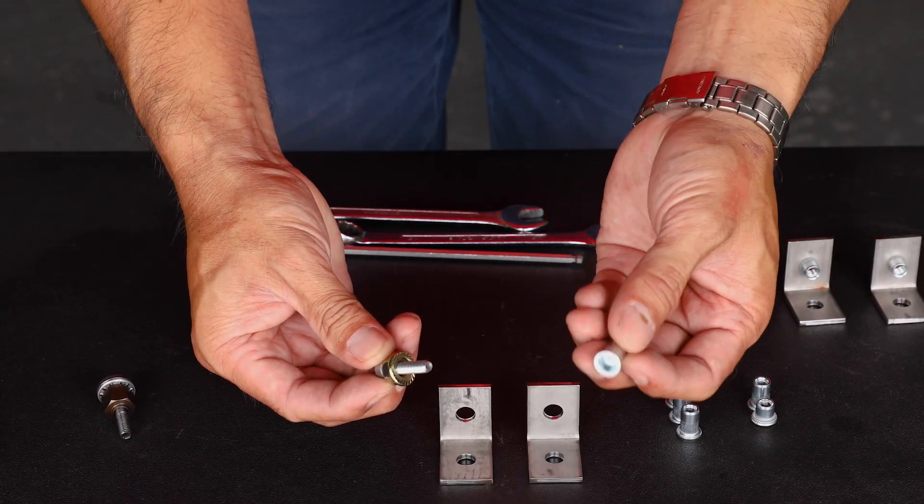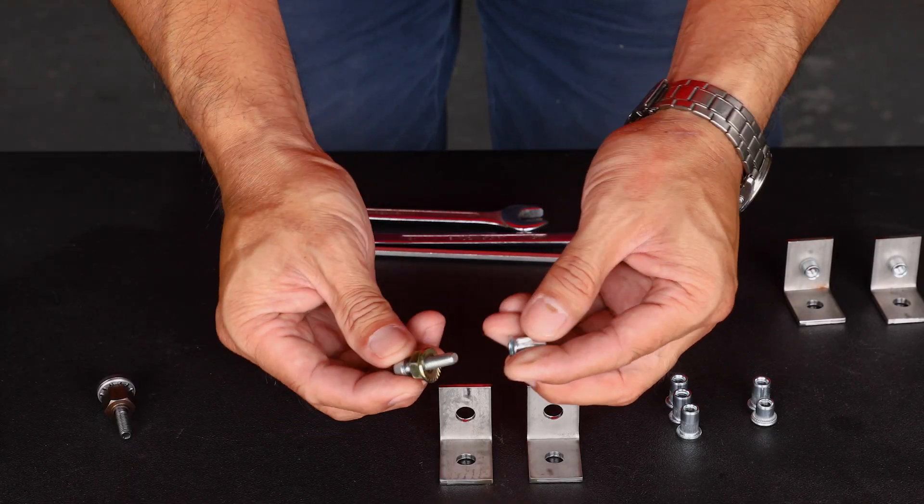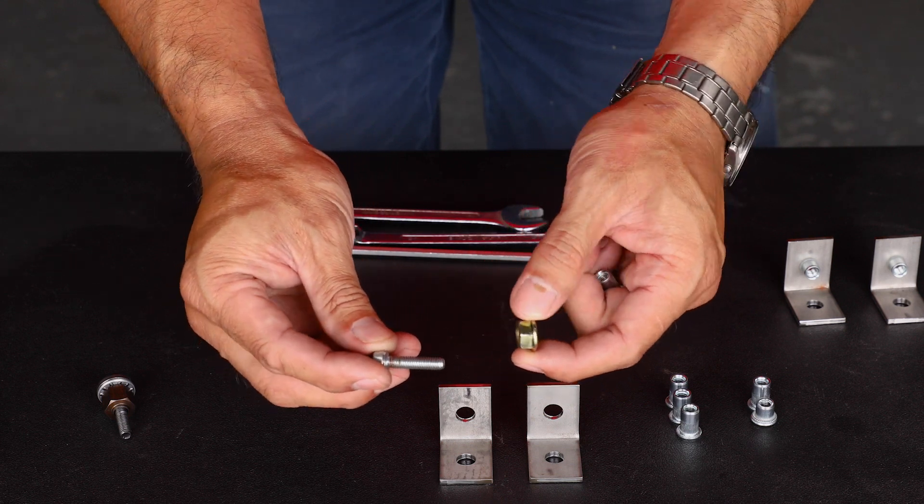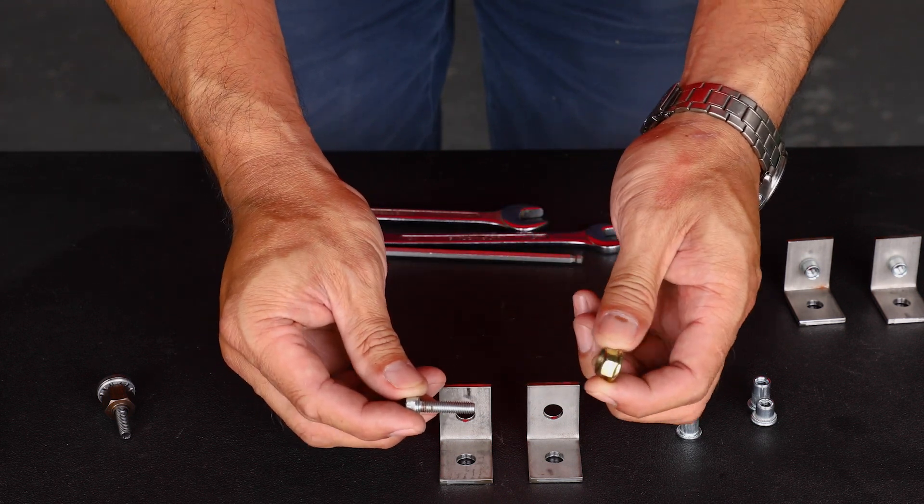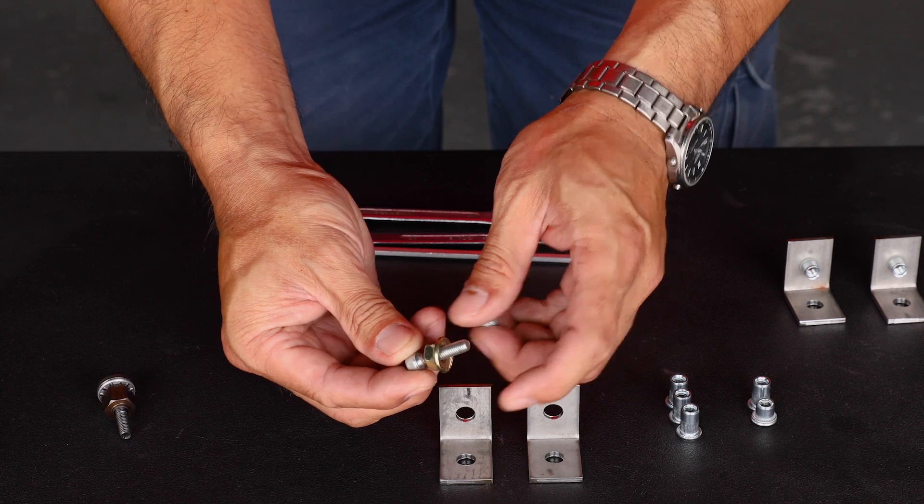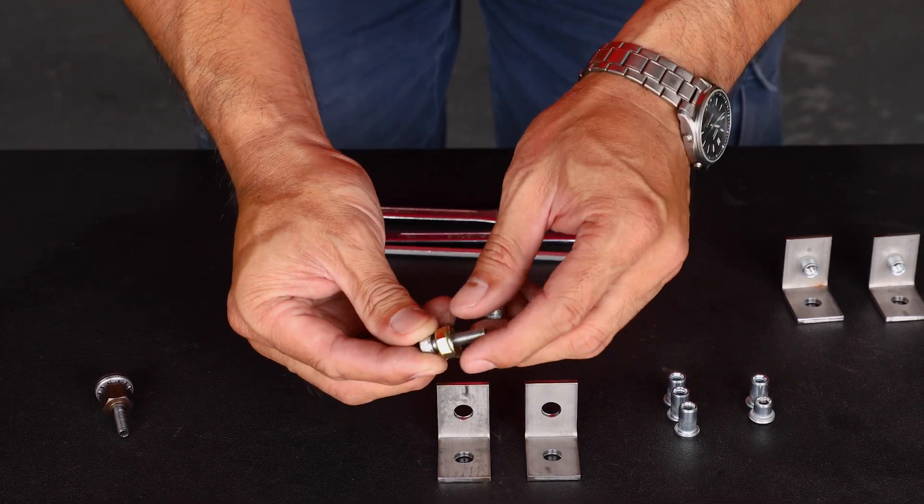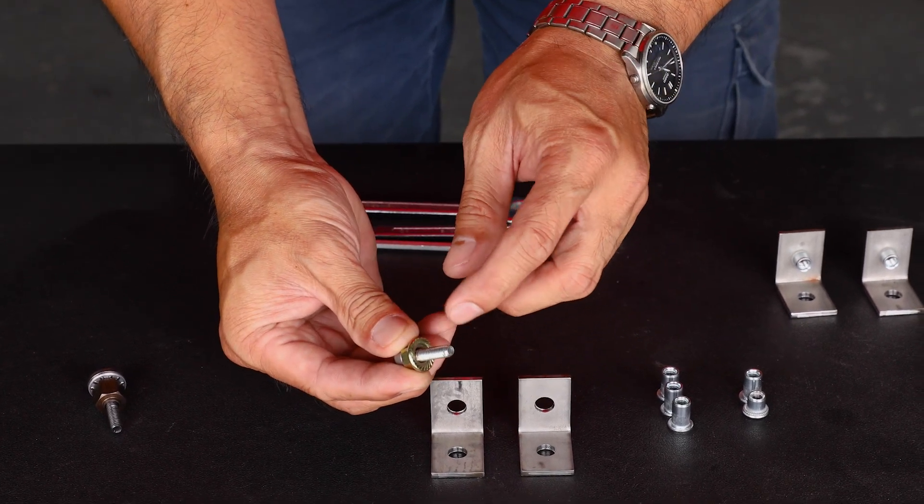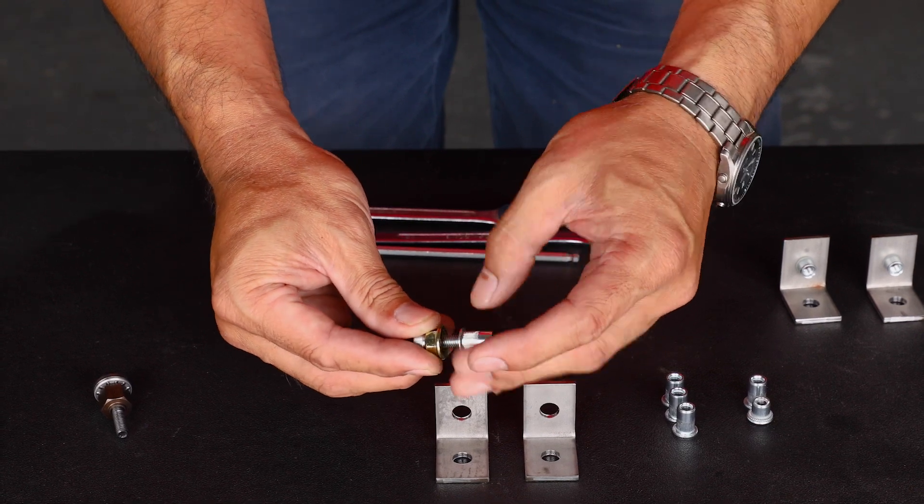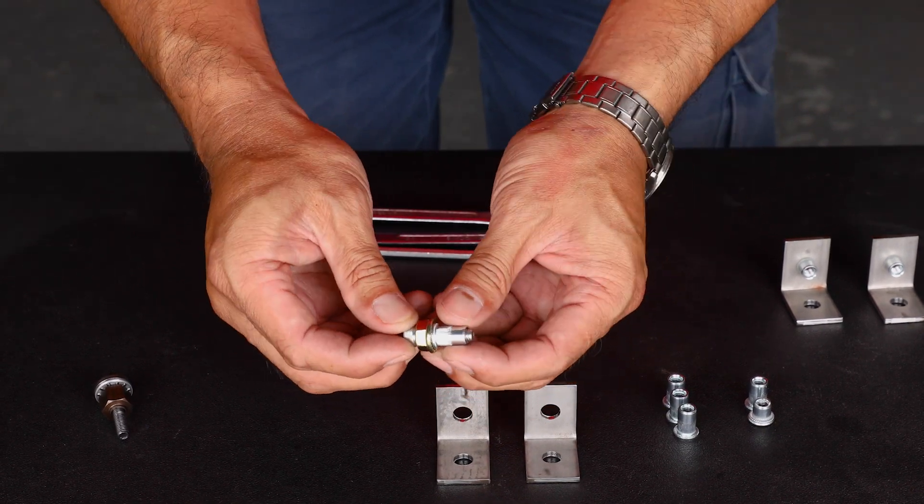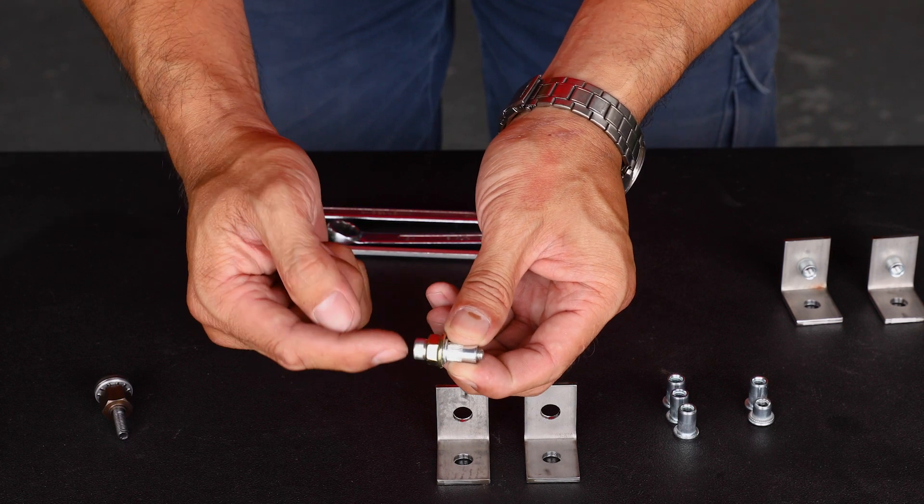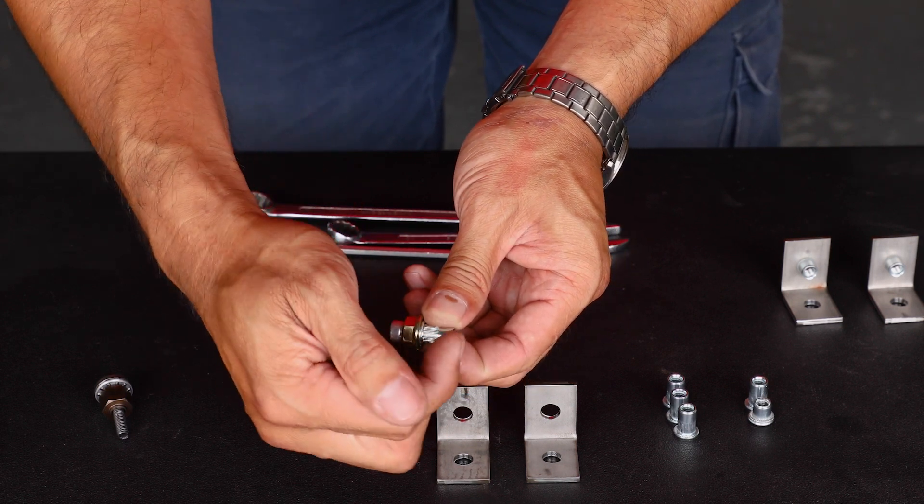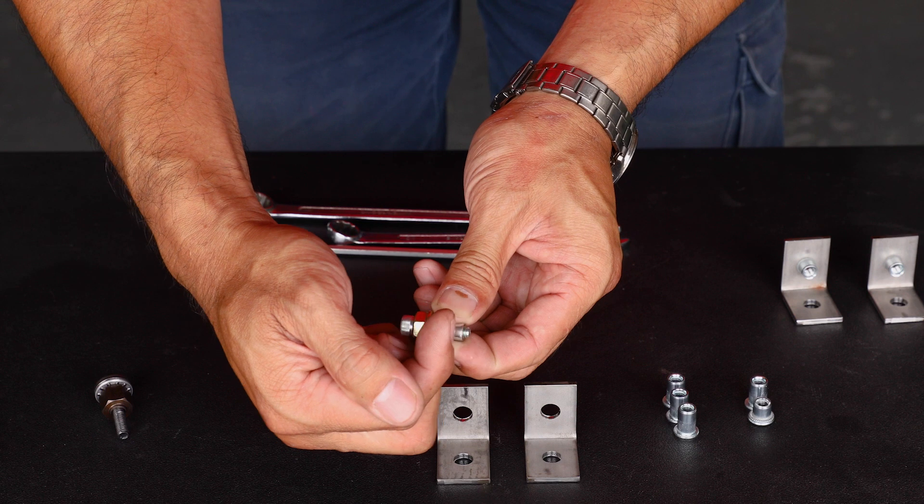Okay we're going to set this nutsert with this tool today so I'll explain how this works. We've got the M6 bolt, we've got the M8 serrated nut. We place it on this direction so that we have the serrations up against the nutsert and the way it works is we'll hold this nut in place and we will rotate this bolt and this will pull the thread and set the nutsert.